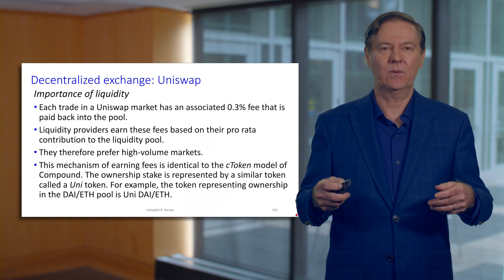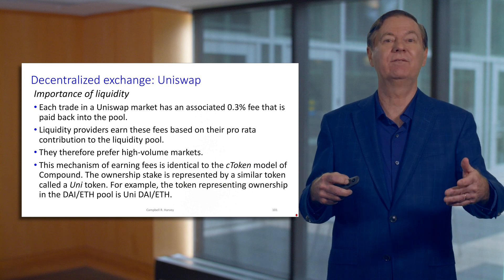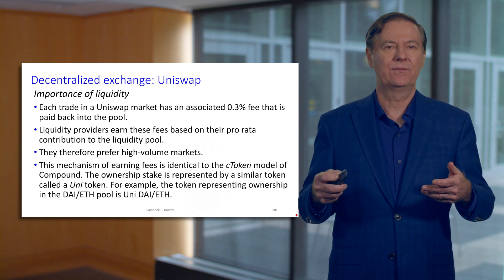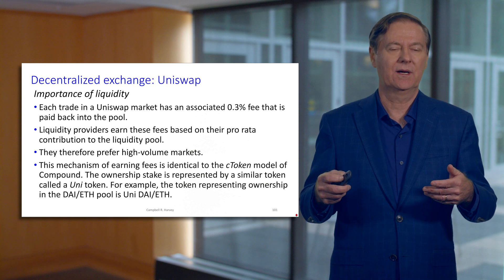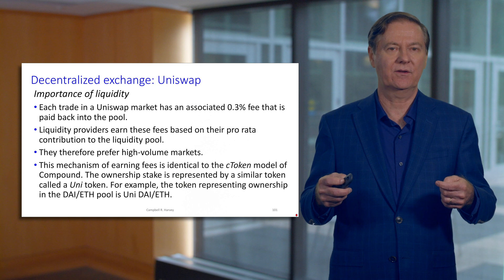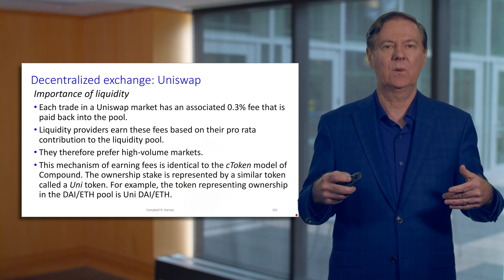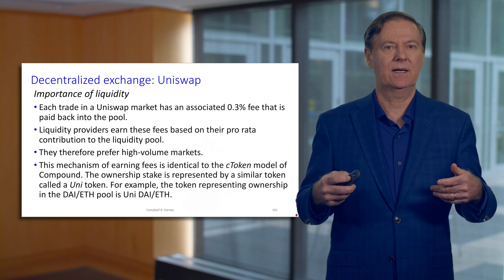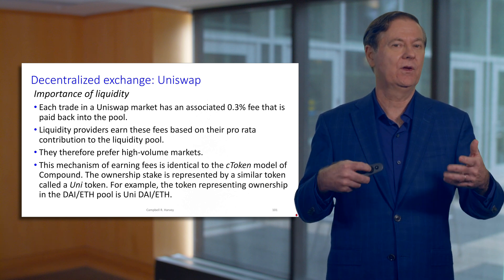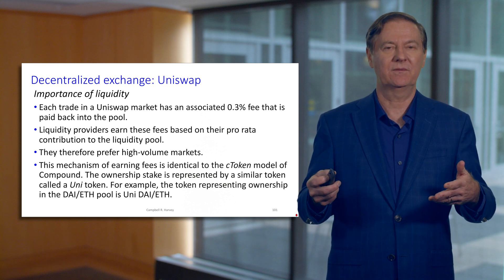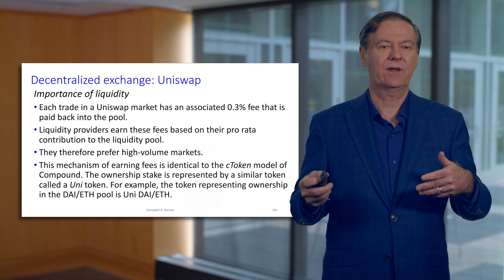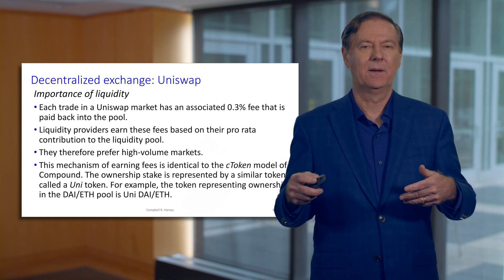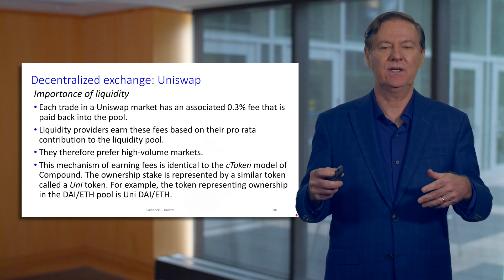If you're supplying liquidity, you would want to go to a pool with a lot of volume and turnover. This mechanism is very similar to the cToken that we discussed with Compound — you provide liquidity and receive a share of the pool. Instead of cTokens, Uniswap has its own version: think of a DAI/Ethereum pool as having a uni token denominated as DAI slash Ethereum. It's a little different, but the same basic idea.